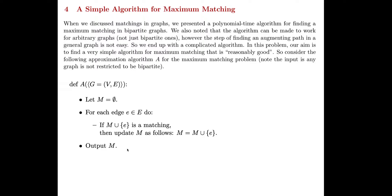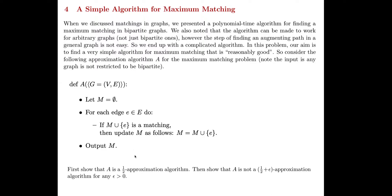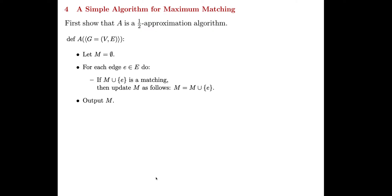Given this algorithm, we want to show two things: first, that it is a one-half approximation algorithm, and second, that it is not better than a one-half approximation — meaning it is not a one-half plus epsilon approximation algorithm. Let's tackle the first part.